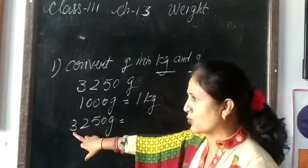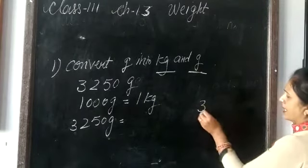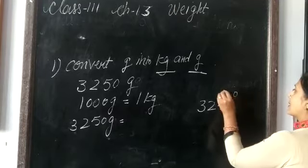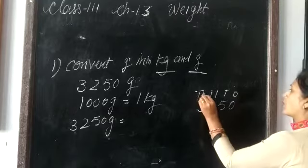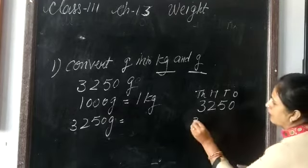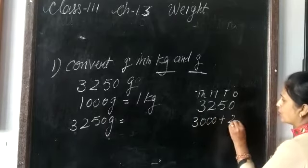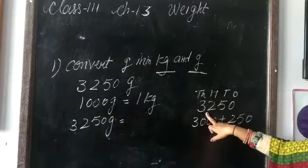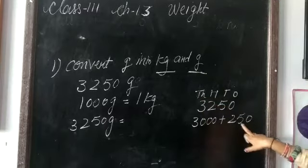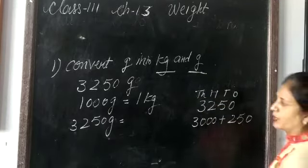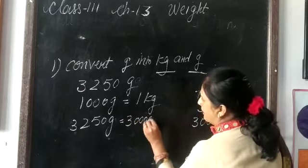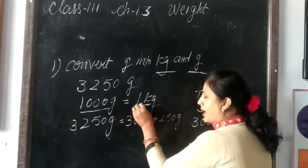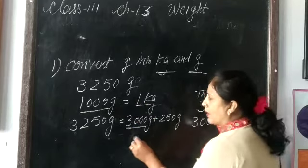We will separate the thousands place. We place 3250 and write the place values: ones, tens, hundreds, thousands. We separate the thousands place, writing it as 3000 plus 250. That means 3000 grams plus 250 grams. 1000 grams makes 1 kilogram, so 3000 grams makes 3 kilograms.